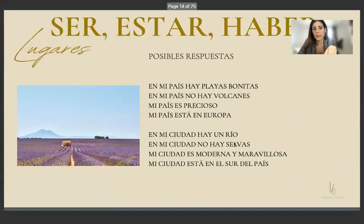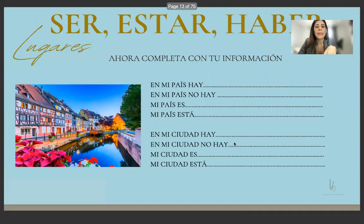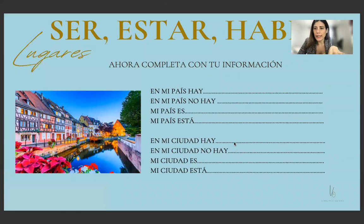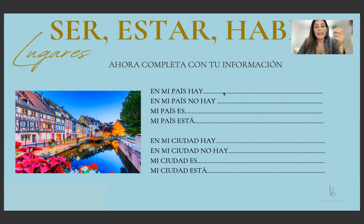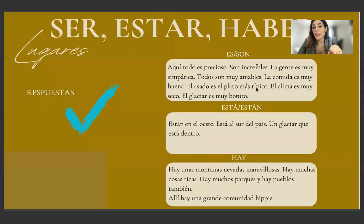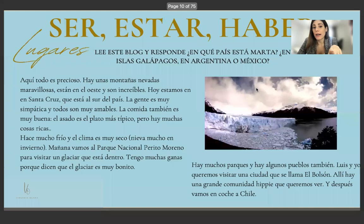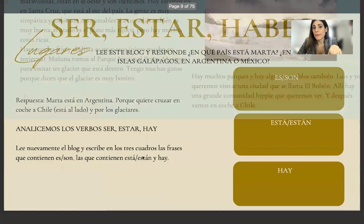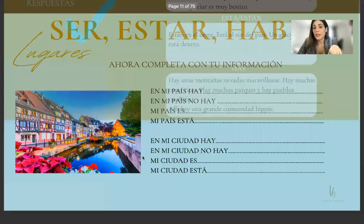First let's do an exercise, then we'll look at the usage. Remember: hay means 'there is' / 'there are'. Complete: en mi país hay... — for example restaurantes, lagos. You have vocabulary from the slides. Also: en mi país no hay — for example, en mi país no hay volcanes.